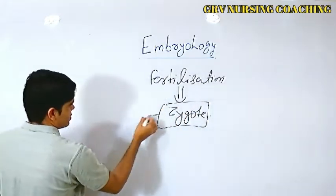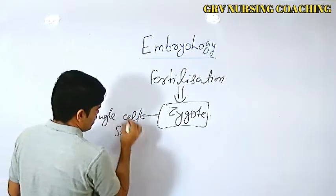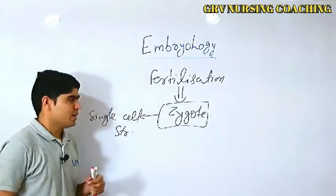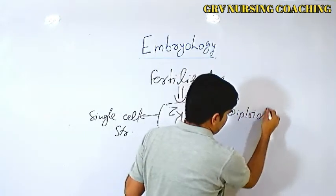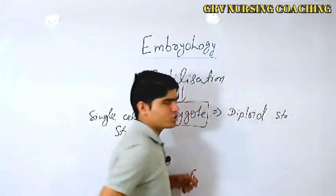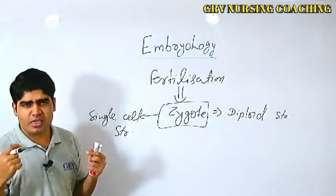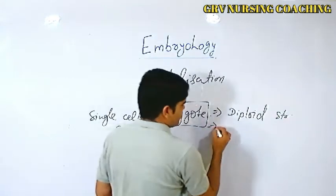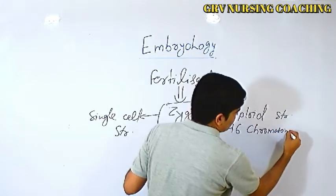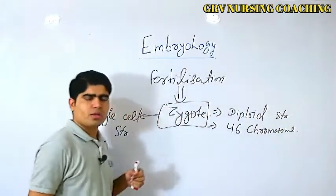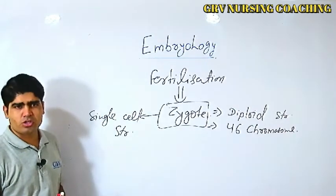Zygote is a single-cell structure. Zygote is a diploid structure. How many chromosomes does the zygote have? 46 chromosomes are present in the zygote.